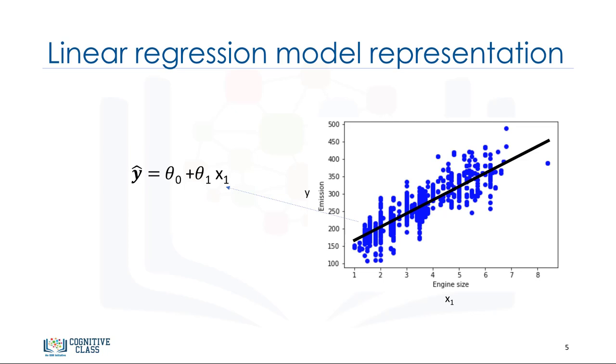We're going to predict the target value y, in our case using the independent variable engine size, represented by x1. The fit line is shown traditionally as a polynomial. In a simple regression problem, a single x, the form of the model would be theta 0 plus theta 1 x1. In this equation, y hat is the dependent variable or the predicted value, and x1 is the independent variable. Theta 0 and theta 1 are the parameters of the line that we must adjust. Theta 1 is known as the slope or gradient of the fitting line, and theta 0 is known as the intercept. Theta 0 and theta 1 are also called the coefficients of the linear equation. You can interpret this equation as y hat being a function of x1 or y hat being dependent of x1.